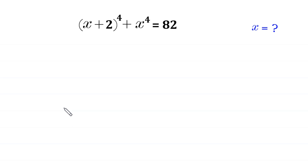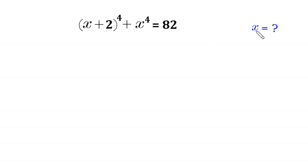Hello. Welcome to how to solve this very nice algebra equation. (x+2)⁴ + x⁴ = 82. We need to find all possible values of x.